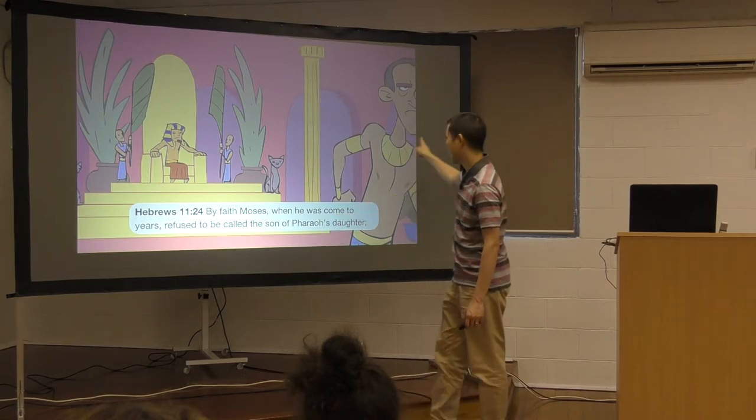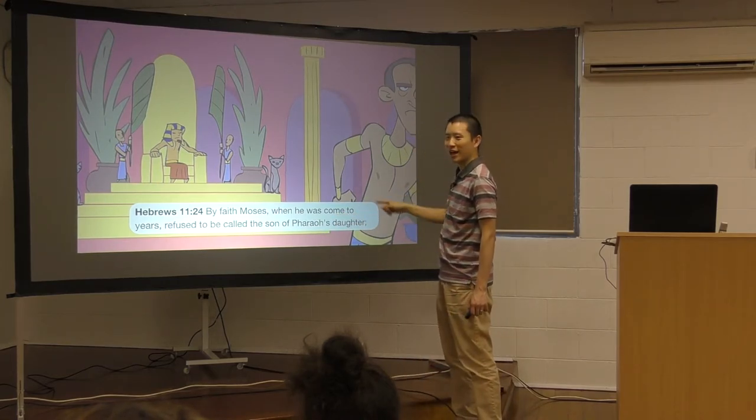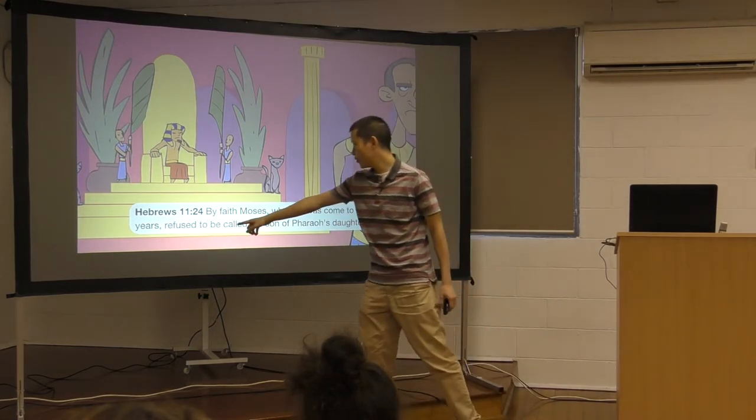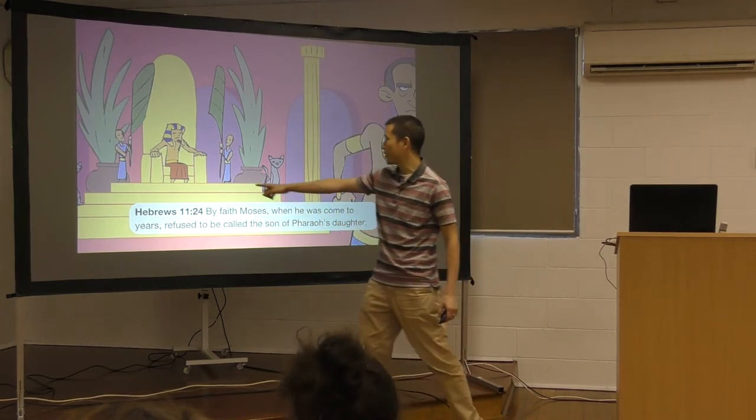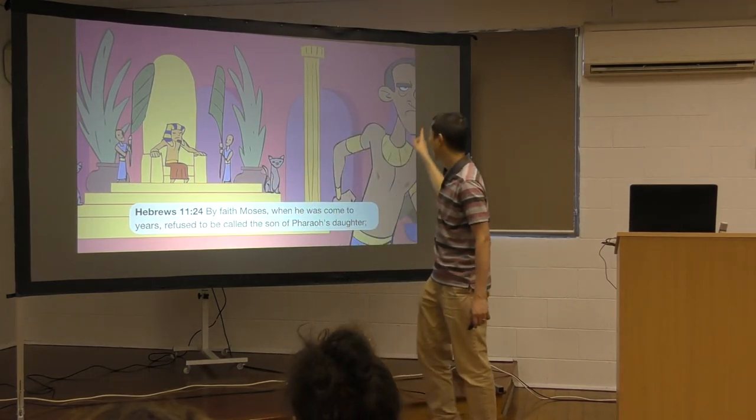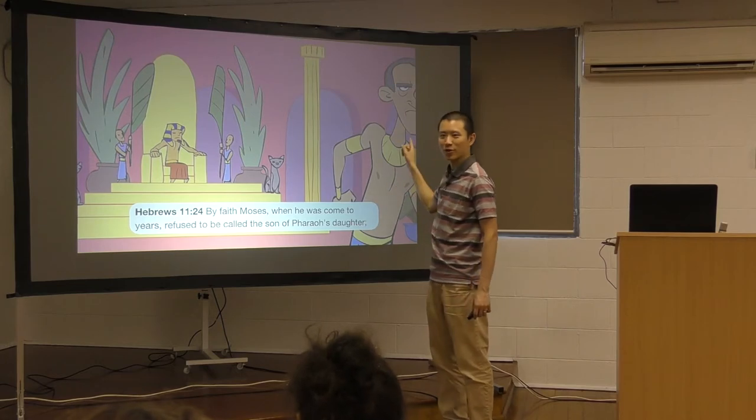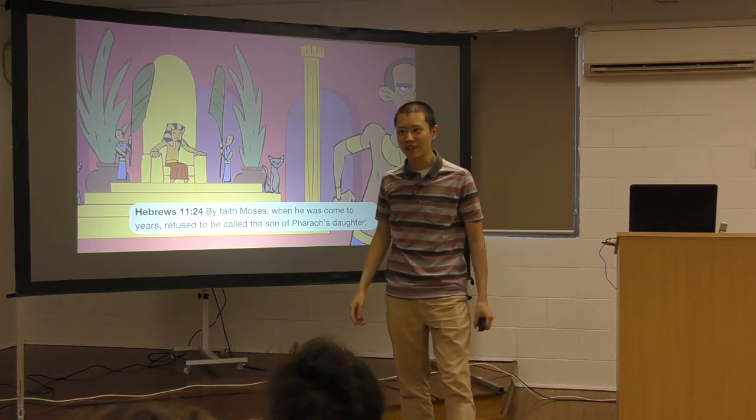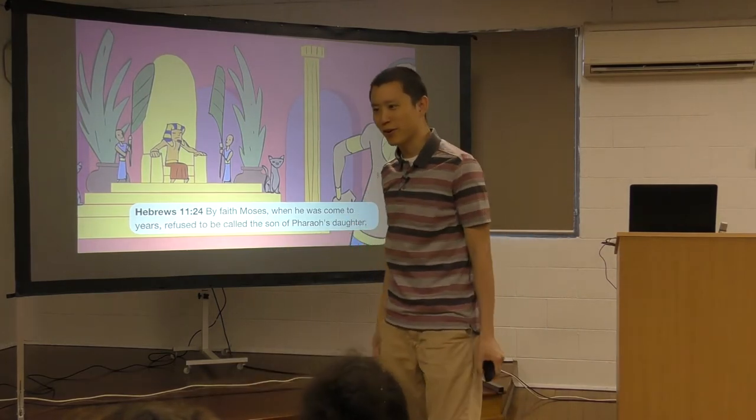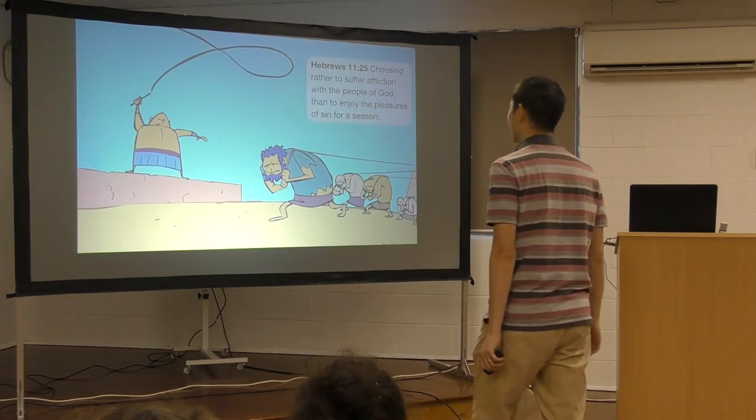By faith, Moses, when he was calm to years, this is when he was an adult now, refused to be called the son of Pharaoh's daughter. So he, even though he was raised by Pharaoh's daughter, when he came to years, when he was older, he said, you know what? I don't want to be called an Egyptian. I'm not an Egyptian.